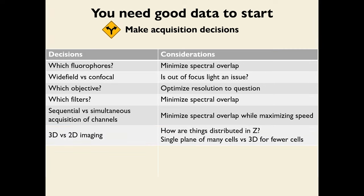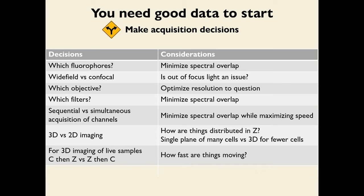You also have to consider whether to do 3D or 2D imaging. If things are distributed non-uniformly in Z, you may want a three-dimensional Z-stack. If one plane is as representative as any other, single-plane imaging is more efficient — allowing you to image many more cells. For 3D live imaging, you can acquire channels first then Z-planes, or Z-planes first then channels; the choice depends on how fast things are moving in the live sample to avoid smearing.